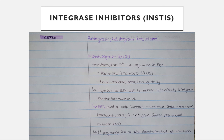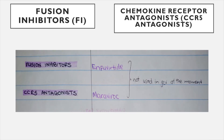If you have an obese patient, you'd rather put them on tenofovir than dolutegravir because of the weight gain it causes. Please note that dolutegravir causes neural tube defects, so if a patient is pregnant, avoid giving this regimen during the first trimester — most suggest avoiding it throughout the whole pregnancy. Fusion inhibitors and chemokine receptor antagonists are not used in the government sector, only private — examples include enfuvirtide and maraviroc, so you don't need to know about them.